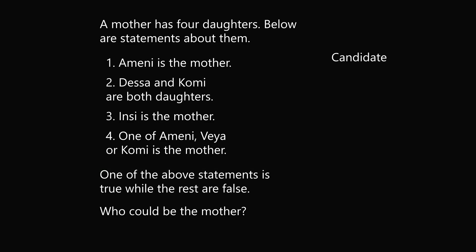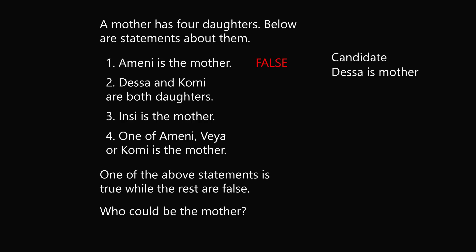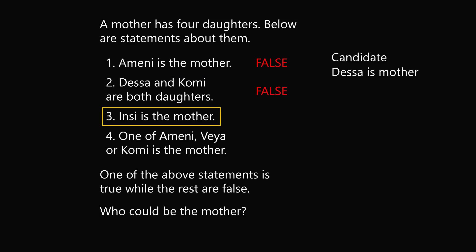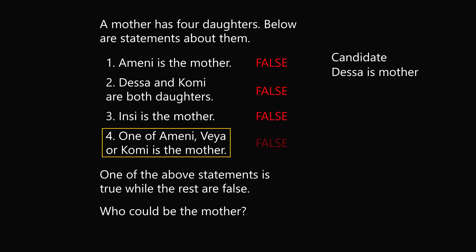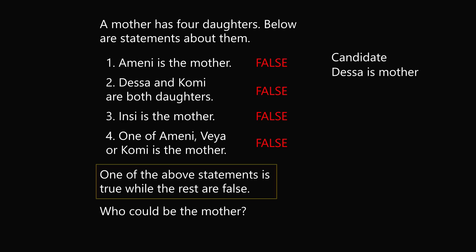Let's suppose that Dessa is the mother. In that case, statement 1 would have to be false. Statement 2, that Dessa is a daughter, would also have to be false. Statement 3, that Insi is the mother, would also be false. And statement 4, that one of A-meni, Veya, or Komi is the mother, would also be false. But we've now shown that all four statements are false, and we know that one of them has to be true. So it's not possible that Dessa is the mother — we've derived a contradiction.